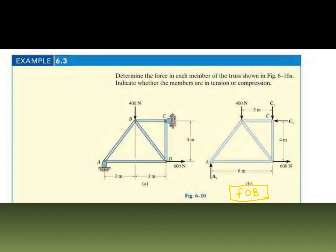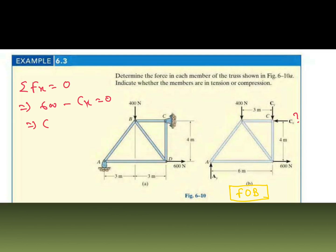Here we apply the equation of equilibrium to the free body diagram. Summation of all vertical forces equals zero, and summation of all horizontal forces equals zero. First we consider horizontal forces, because in the horizontal direction only CX is unknown. Right side is positive, left is negative. Summation of all horizontal forces of the entire truss equals zero, so 600 N minus CX equals zero, giving CX equal to 600 N.